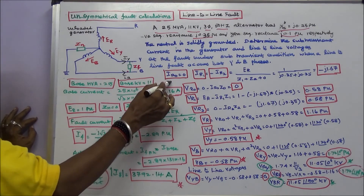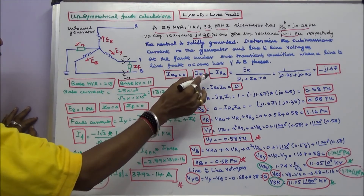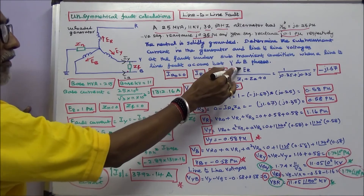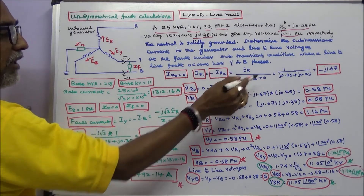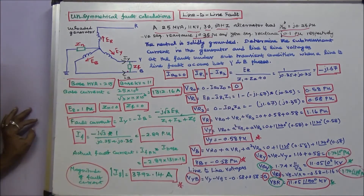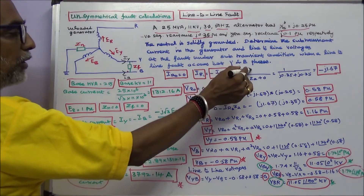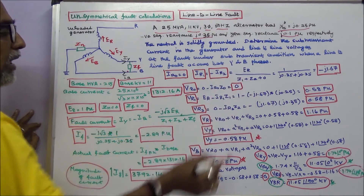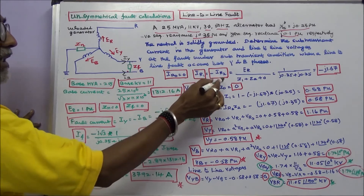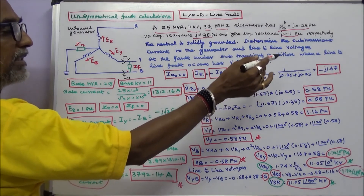IR0 is equal to 0. I1 equals minus IR2, equal to ER divided by Z1 plus Z2 plus ZF. ZF is 0. Substituting ER equal to 1, Z1 and Z2 values: IR1 and minus IR2 is equal to minus j1.67 per unit.